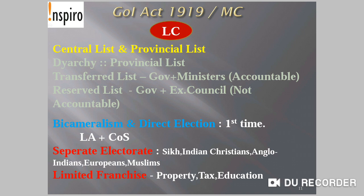Direct elections were for the first time introduced under the Government of India Act 1919. The separate electorate process that had started under the 1909 Act was extended. Separate electorate was extended to other communities such as Sikhs, Indian Christians, Anglo-Indians, and Europeans, in addition to Muslims who already had it. Limited franchise was also a feature — meaning voting rights were reserved only for property-owning, tax-paying, or educated citizens of India at that time.